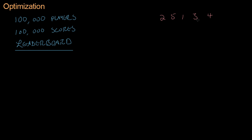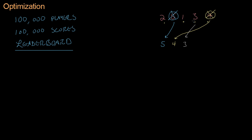So here are our five scores: 2, 4, 5, 1, 2, 5, 1, 3, 4. The algorithm first scans through the list to find the highest number. We have to look at every number because we never know if the last one is the highest. We see five is the highest, so we remove it and transfer it to a new list. We repeat this — four is next, then three, then two, then one — until the list is fully sorted.